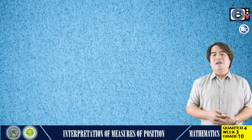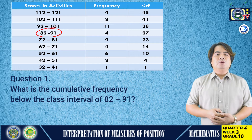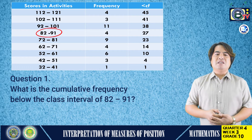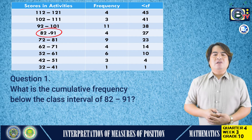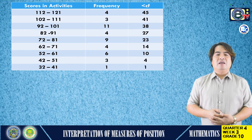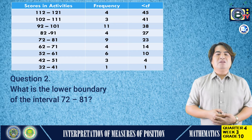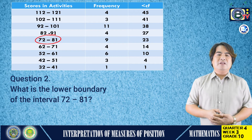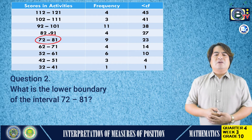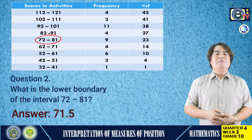Question number one: What is the cumulative frequency below the class interval of 82 to 91? The answer is 23. Question number two: What is the lower boundary of the interval 72 to 81? The answer is 71.5.